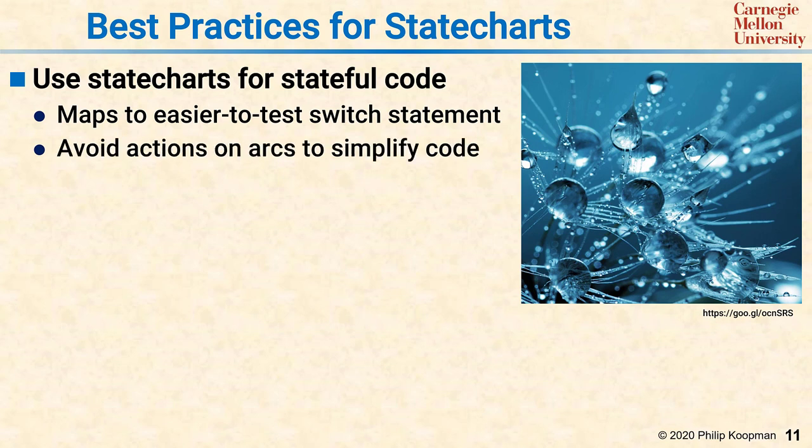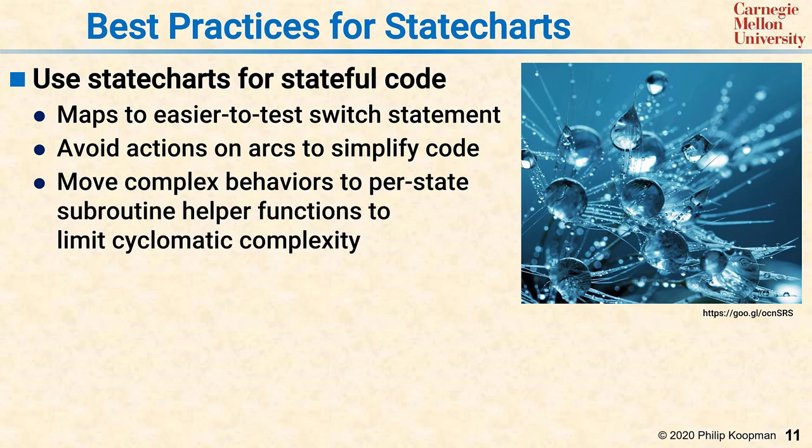I recommend that you avoid putting actions on arcs to simplify the code. Yes, there are state machines that have actions on arcs, but what we found is they lead to increased bugs in the code and in the design. You should also keep your code complexity under control, for example, by moving complex behaviors inside a state out to a subroutine helper function so that cyclomatic complexity primarily comes from the switch statement and not from a bunch of spaghetti code buried into the individual cases.